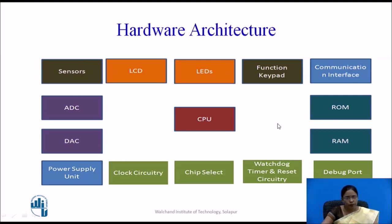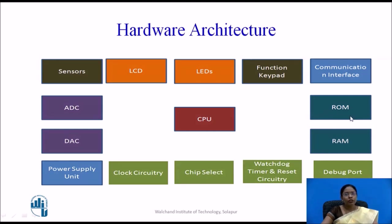Returning to the hardware architecture, let us discuss memory further. RAM (Random Access Memory) is used for the usual execution of programs and instructions. ROM (Read Only Memory) stores permanent instructions and is used to store the firmware of an embedded system.